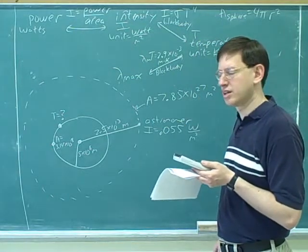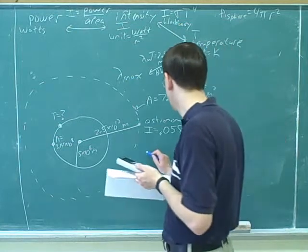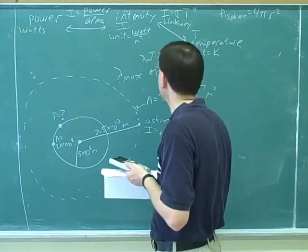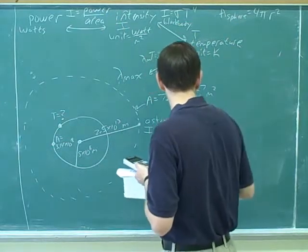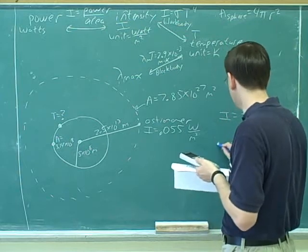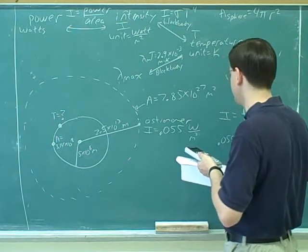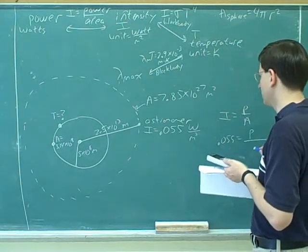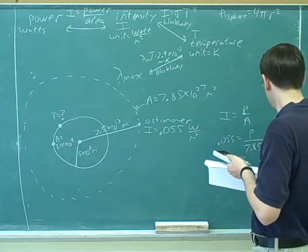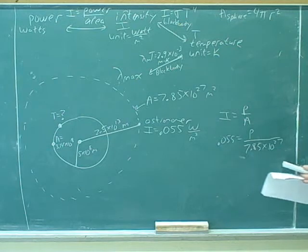I put P over that equals 0.055. Yeah, that's right. Now we used our intensity and power equation. So intensity is power over area. So we've got 0.055 equals P over 7.85 times 10 to the 27th.